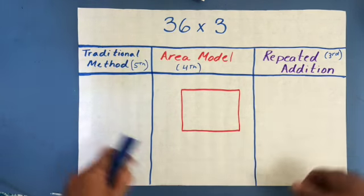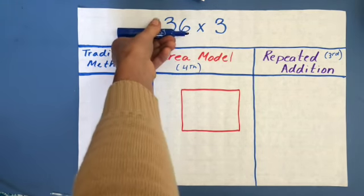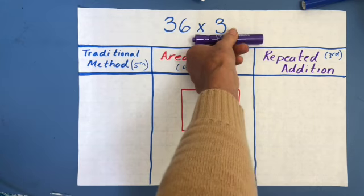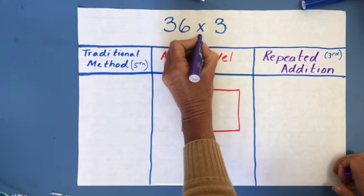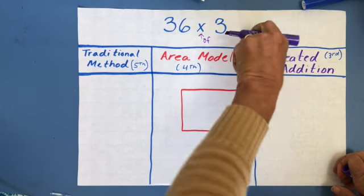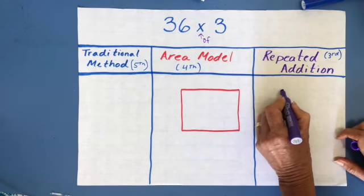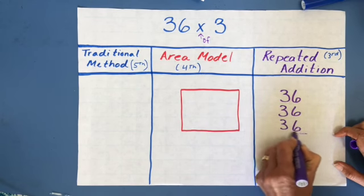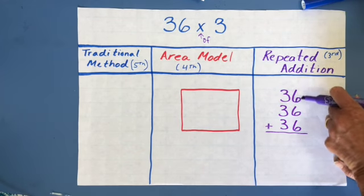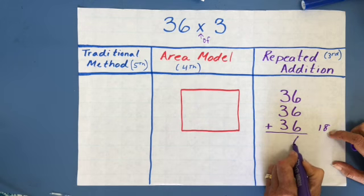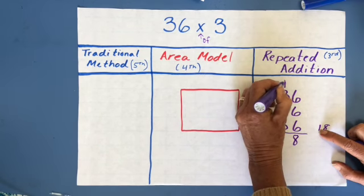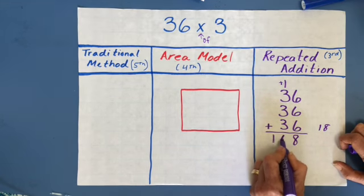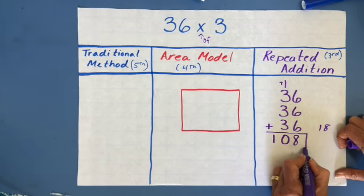By now you should know how to do this — I'll give you some time to try this problem. For repeated addition, I can go either way because of the commutative property. I'll do 3 groups of 36: 1 group, 2 groups, 3 groups. Using skip counting: 6, 12, 18 — that's two digits, so the ones place goes down and the tens place goes up. Then skip counting the tens: 3, 6, 9, plus 1 more is 10. There's no hundreds place, so I put 10 down. The answer is 108.